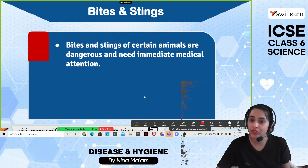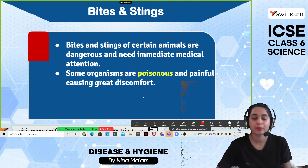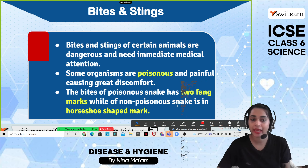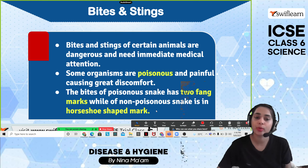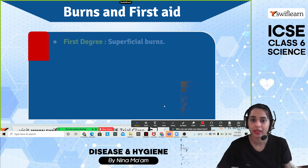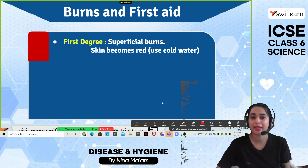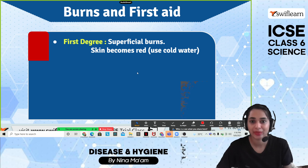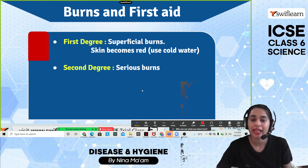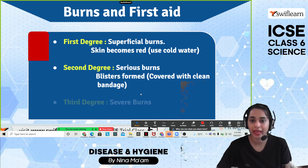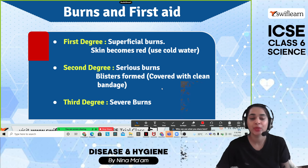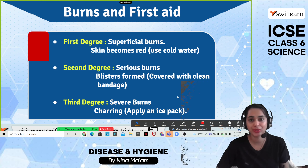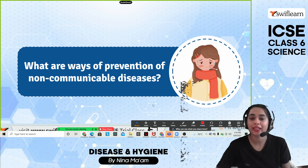Bites and stings of certain animals are dangerous and need immediate medical attention. Some organisms are poisonous and cause great discomfort, like a snake bite. Regarding burns: first-degree burns cause redness; second-degree burns cause blisters; third-degree burns are severe. For first-degree burns, use cold water; for second-degree, cover with a clean bandage; for severe burns, apply an ice pack.